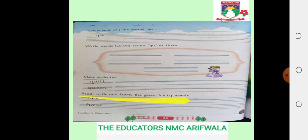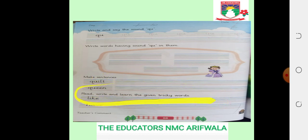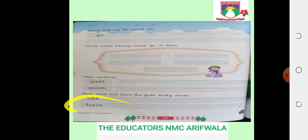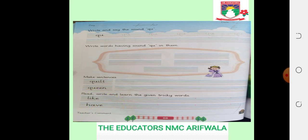Read, write, and learn the given tricky words. Today we have tricky words: 'like' and 'have.' We will write these tricky words, read them — L-I-K-E, like, and H-A-V-E, have.